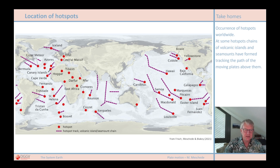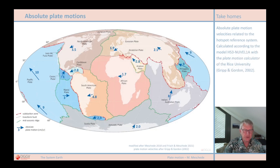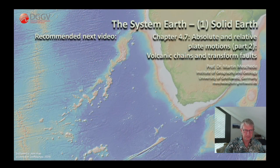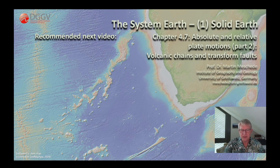I'll take a closer look at these kinks in the next video. In summary, we can assign absolute directions and velocities of plate motion to the individual plates, as shown in this figure. And the relative movements can also be calculated from the absolute velocities. This is enough for the moment on relative and absolute plate movements, but there is more information in the next video. Thank you for listening, and I'll be happy if you stick around. I recommend continuing with the second part of the video on absolute and relative plate motions, which discusses the differences in the linear structures of volcanic chains and transform faults.